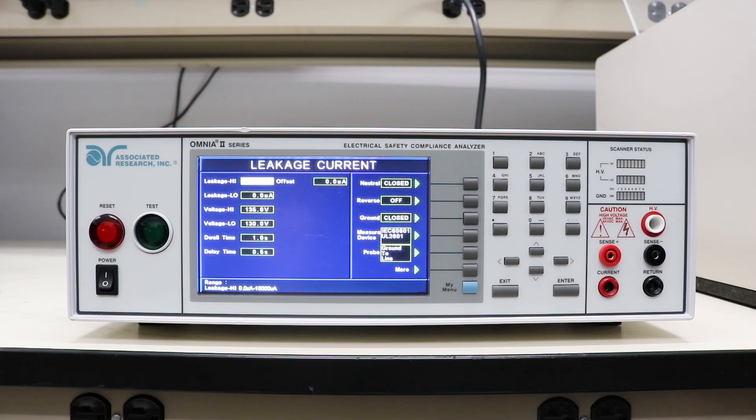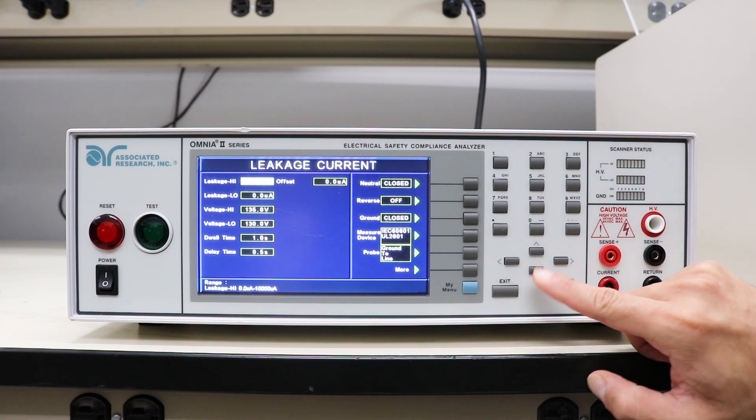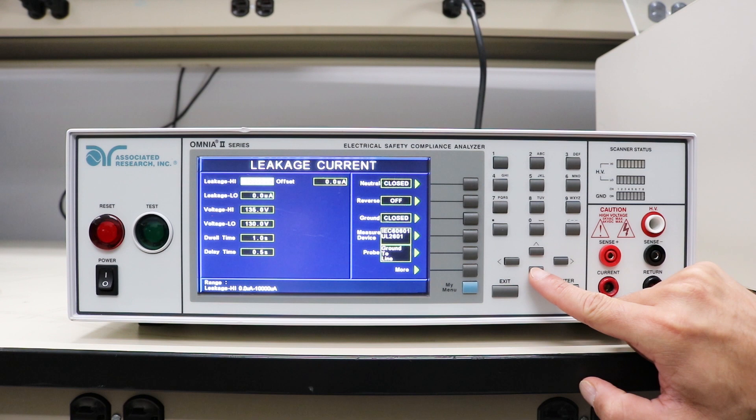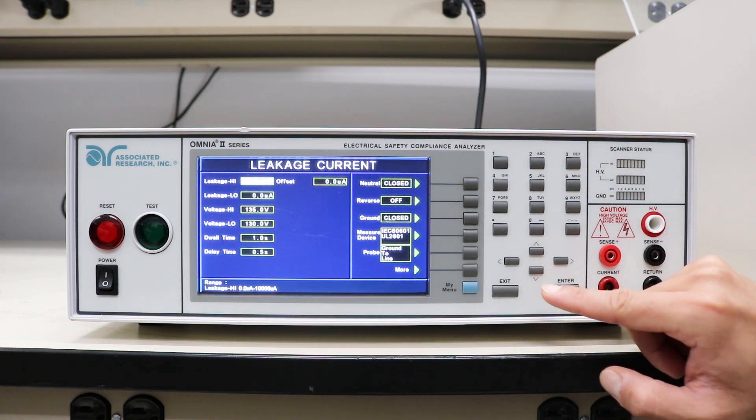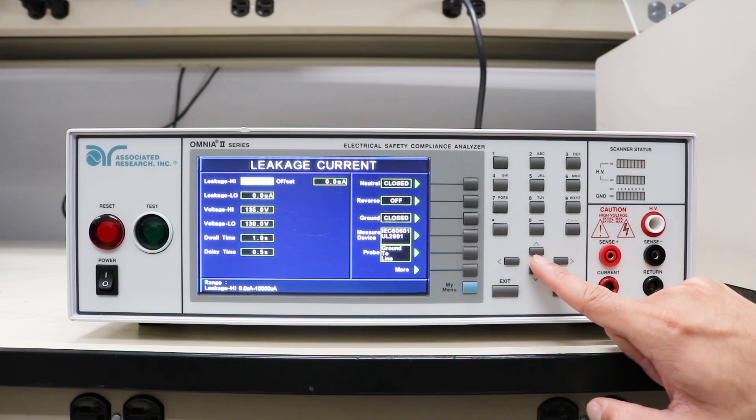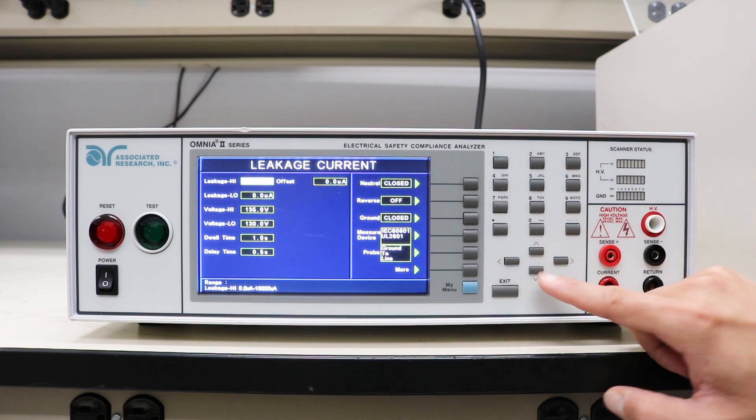We're going to go over the test parameters that we need to program before we can actually perform the earth leakage tests. Starting with the first test parameter, leakage high. This is the maximum allowable leakage current per the test standard. Since we're testing according to the IEC 60601-1, the high limit for the leakage current is 10 milliamps for single fault conditions and 5 milliamps for normal conditions. We're going to leave that at 10,000 microamps, which is the same as 10 milliamps.